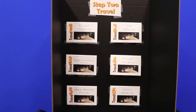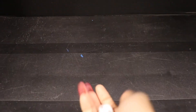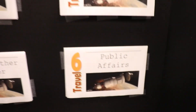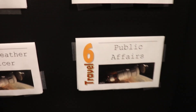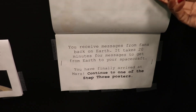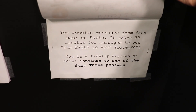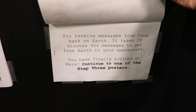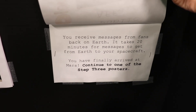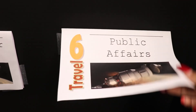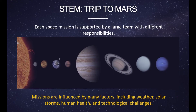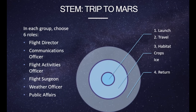Okay guys, let's see how we do this time with travel. We got our dice — let's roll it. We landed on six. Six, public affairs. Let's see what we got to do for travel. You received messages from fans back on earth — it takes 20 minutes for messages to get from earth to your spacecraft. You have finally arrived at Mars. Continue to one of the step three posters. Yes, we're on Mars! We'll continue next for part two of Trip to Mars. Now that we have arrived on Mars, our focus will be habitat and return to earth.